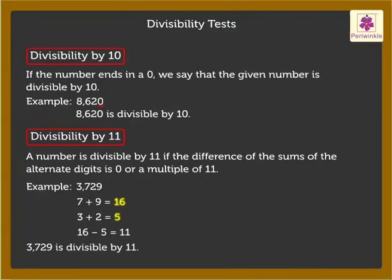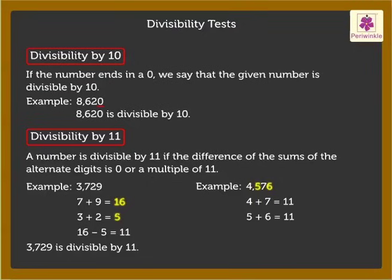Let us take one more example. For the number 4576, we add the digits 4 plus 7 to get 11, and 5 plus 6 gives 11. Here, the difference between the two sums is 0. Hence, the number 4576 is divisible by 11.